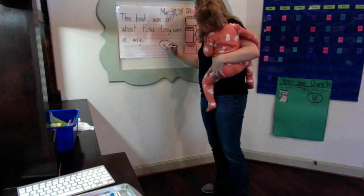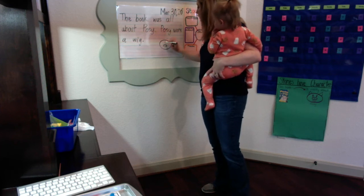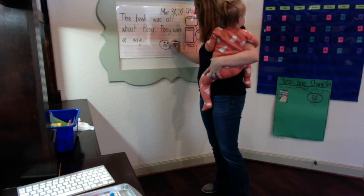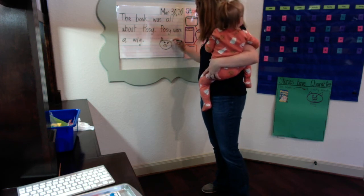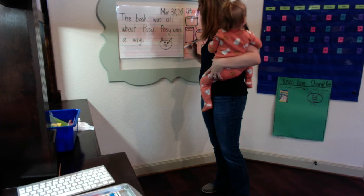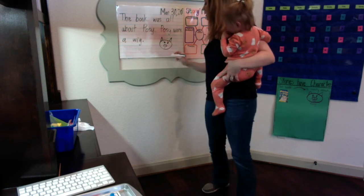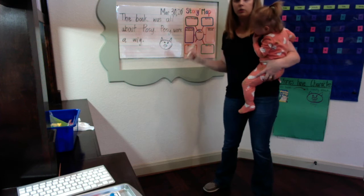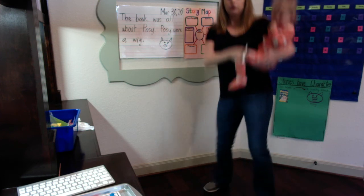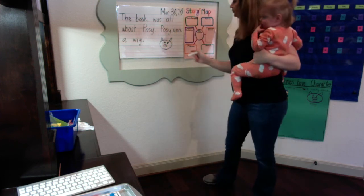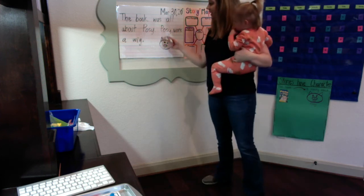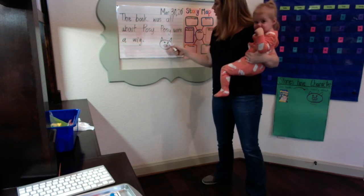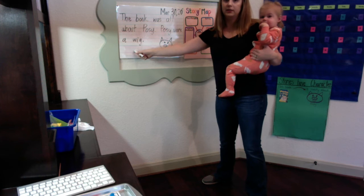So I'm going to draw my pig here — this is Posey the Pig. She has some ears here, but my sentence says Posey wore a wig, so boys and girls, what do I need to add to my pig? I need to add a wig, because that is what I said. My picture always has to match my sentence.